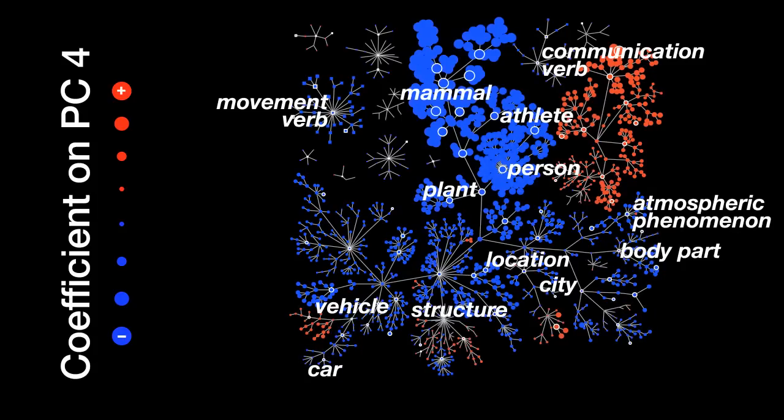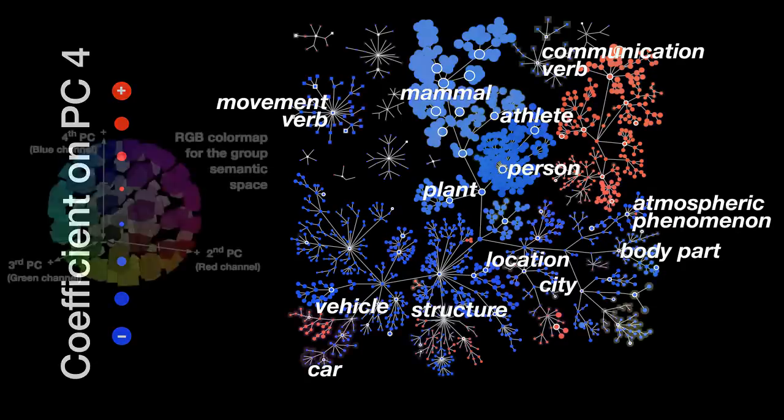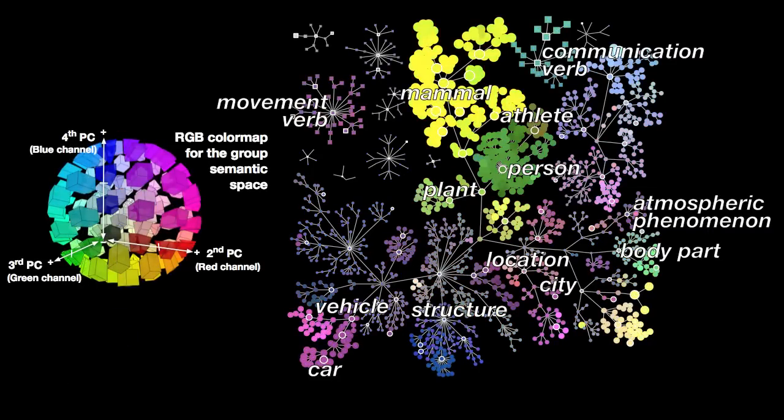But instead of looking at each dimension separately, we can visualize all three at the same time. Now we've colored each node to show where it lies in each dimension. The red component of the color is set by the second dimension, the green component is set by the third, and the blue component is set by the fourth. So for example, the category that's high on the second and third dimensions but low on the fourth, like a mammal, will appear yellow.